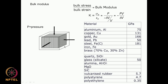Then there is something called bulk modulus. Bulk modulus is the uniform compression of a material under pressure. Suppose a material is dipped inside a vessel containing fluid acting with a certain pressure — the material undergoes compression in all directions. There is bulk stress and bulk strain, where volume comes into the picture. The change in volume divided by original volume is the bulk strain, and the bulk stress is nothing but pressure — force divided by area is pressure. This ratio is called the bulk modulus.